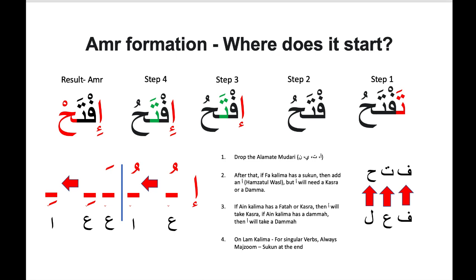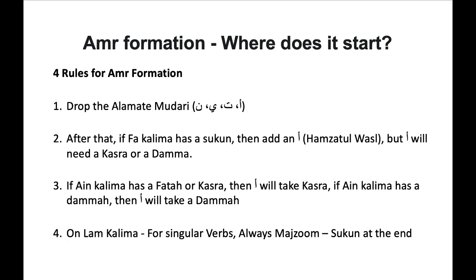Amr normally looks like that. In this chapter we have explained four rules for amr formation. Number one: drop the alamate mudari — a, ta, ya, na. Number two: if fa' kalima has a sukun, then add an alif or hamzatul wasal, but alif will need a kasrah or a damma. Number three: if ain kalima has a fatha or kasrah, then alif will take kasrah; if ain kalima has a damma, then alif will take a damma. Number four: on lam kalima, for singular verbs, always majzoom — there will be a sukun at the end. I would request you to go to the video and practice it, and keep writing it on paper.